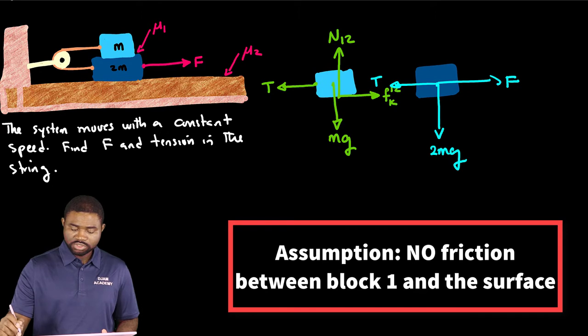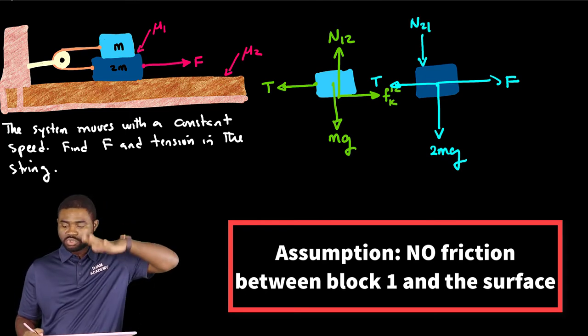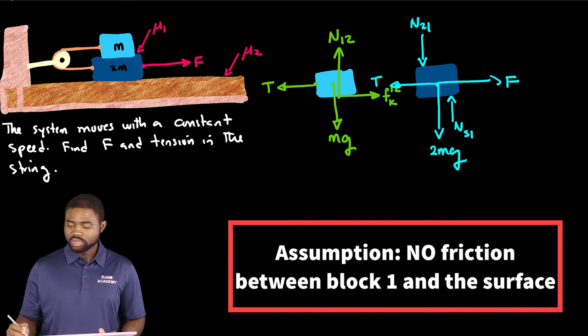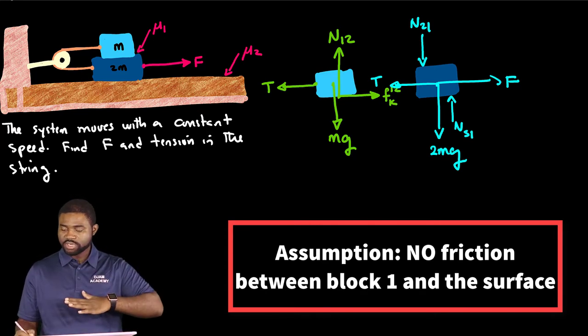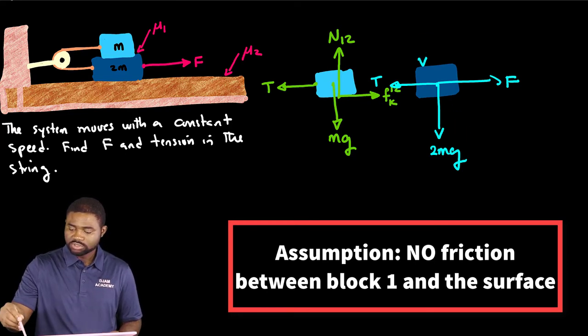Now there are two things here. You have a force acting downwards, this is N21, the normal force of block two on block one. And you have a force acting upward, this is N surface one, the normal force of the surface on block two.